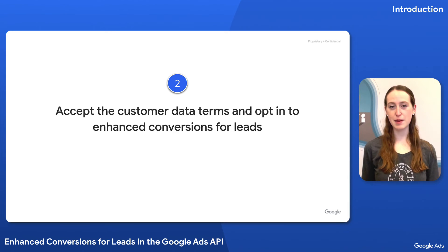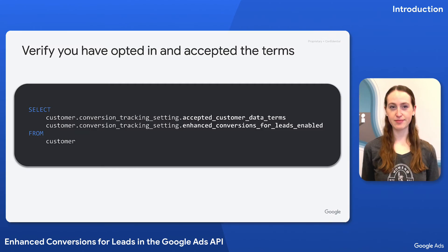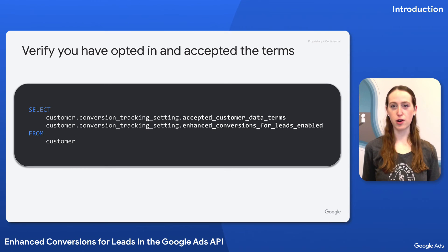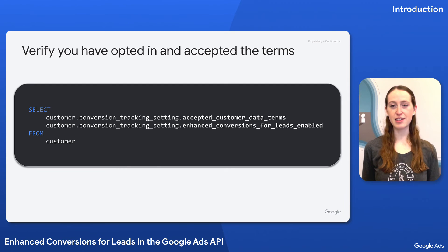Second, you must accept the customer data terms and opt in to Enhanced Conversions for Leads, both for your Google Ads conversion customer. You can verify whether these prerequisites are already met by querying your Google Ads conversion customer for the accepted customer data terms and enhanced conversions for leads-enabled fields. If either of these requirements is not met, follow the instructions linked in the video description to complete these prerequisites.